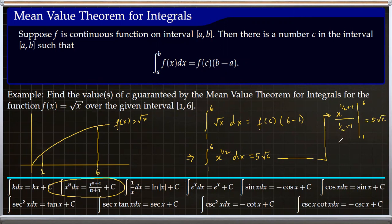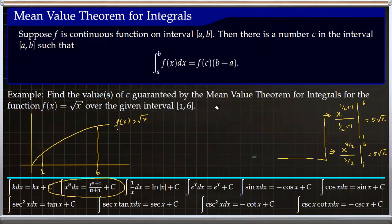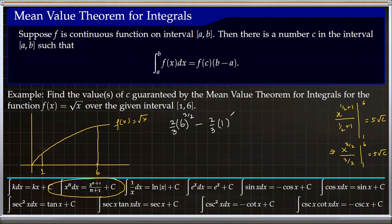Now we evaluate this integral from 1 to 6. Simplifying the expression: on top we have x^(3/2), divided by 3/2 in the denominator, evaluated from 1 to 6, equals 5 times √c. Evaluating at 6 first we get 6^(3/2) divided by 3/2, which I can write as (2/3) times 6^(3/2). Then minus the expression evaluated at 1: 1^(3/2) equals 5 times √c.